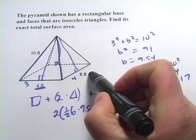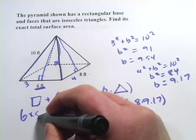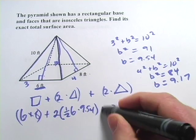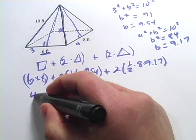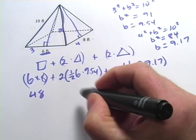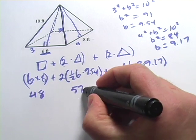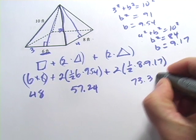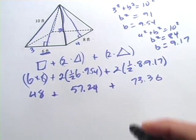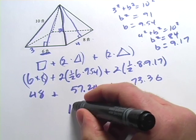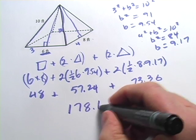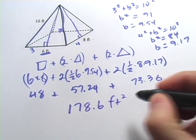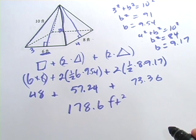And then, of course, our rectangle on the bottom is just six times eight. And we add all these guys together. So six times eight is 48. This one comes out to 57.24. And this one is 73.36. Add all those up and I think you get about 178.6. And this was in feet squared because it's area. So that's how to calculate the surface area of rectangular pyramids.